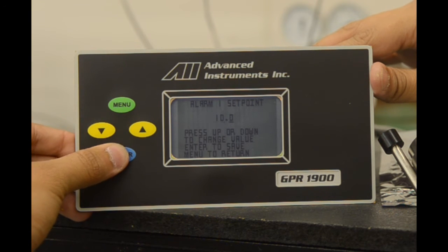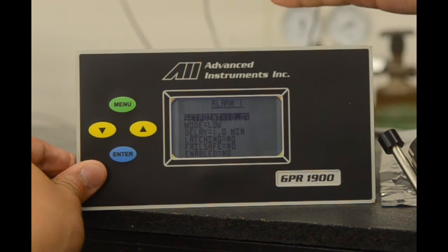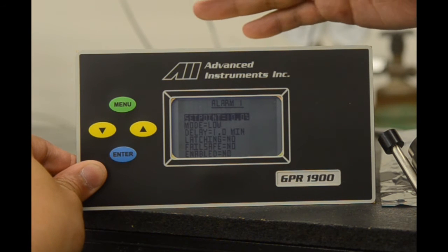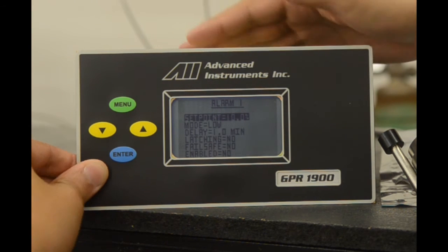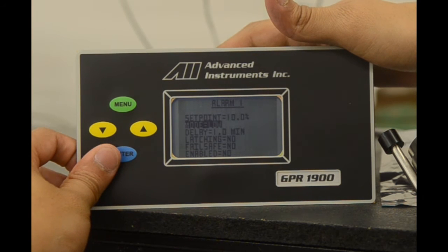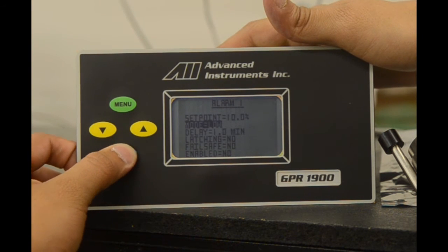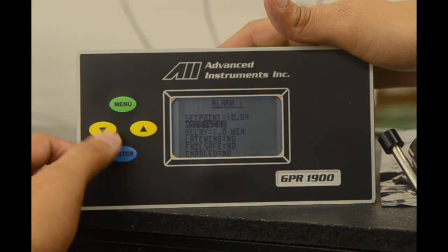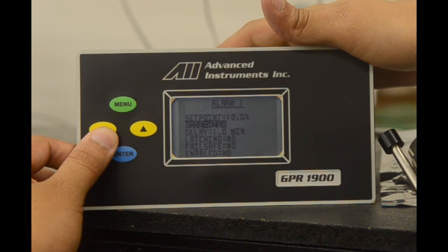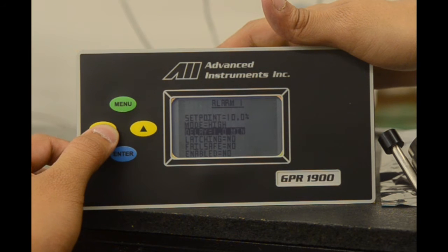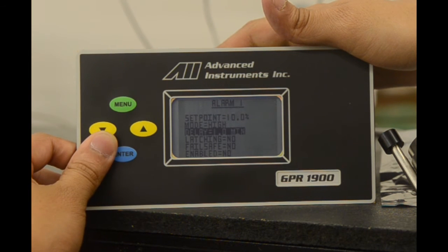The alarm is now set at 10%. Currently, the mode is low. This means that if the oxygen is below 10%, the alarm will fire. We select enter to set it as a high alarm. This means that if the gas is above 10% oxygen, the alarm will be enabled.